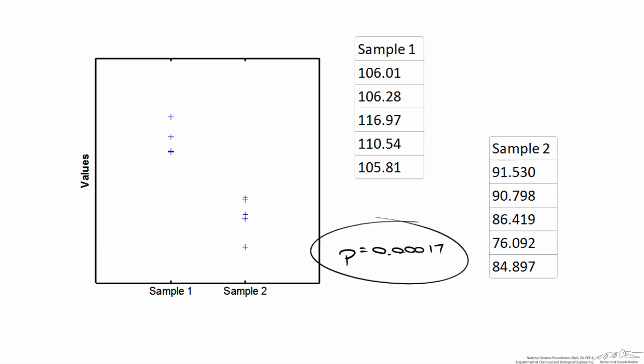This p-value, what it gives us is the likelihood that these two samples actually came from the same mean. So we could rewrite this even as 0.02 percent, or we could say this is, I get about 1 in 5,880.